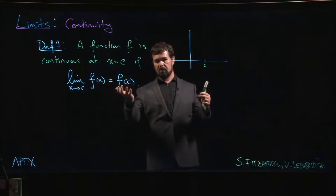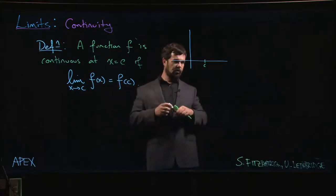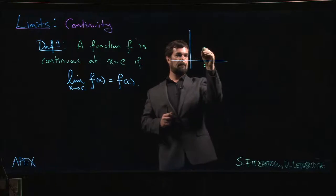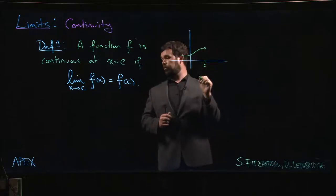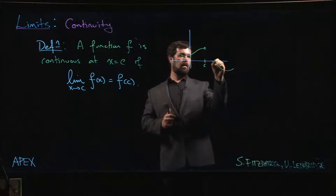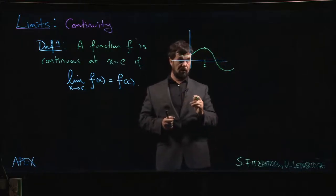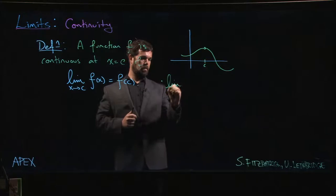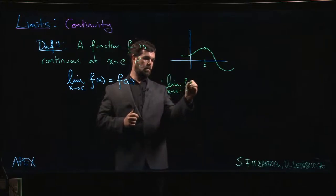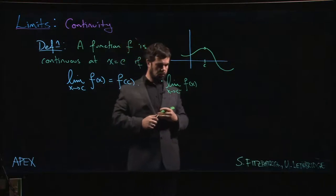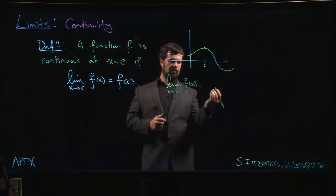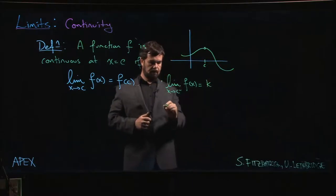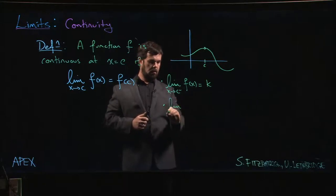Remember that the limit is just a number, but before I can compare two numbers, I need to know that those numbers are defined. So first thing I need to know is that the limit exists, and that means that in particular the limit as x approaches c from the left had better equal the limit as x approaches c from the right. So left-hand limit has to equal, let's call it k. The right-hand limit has to equal k.